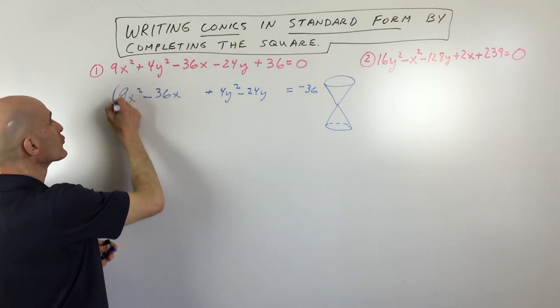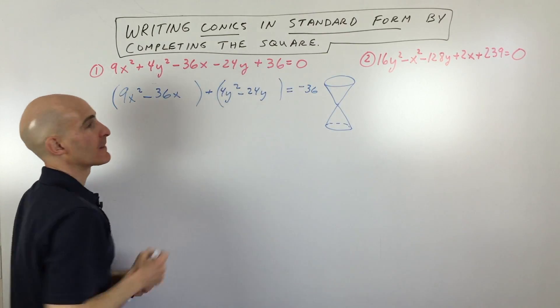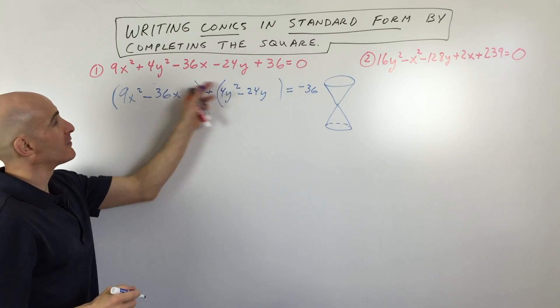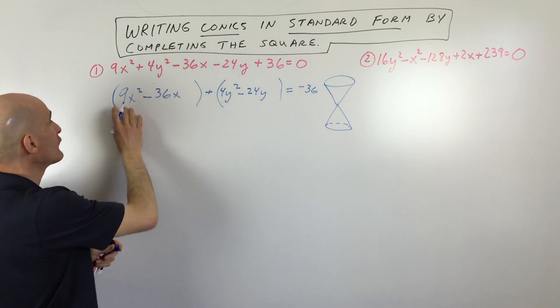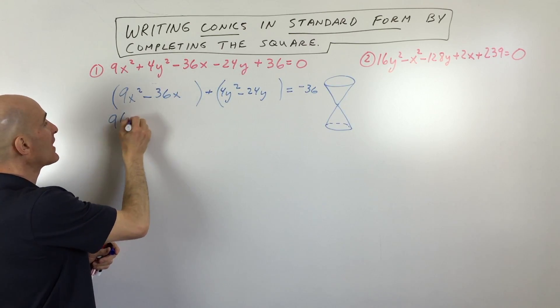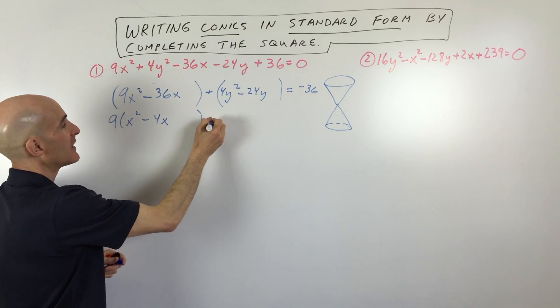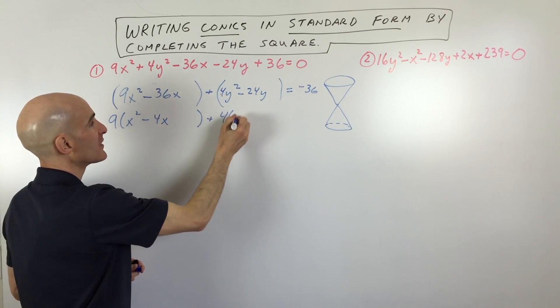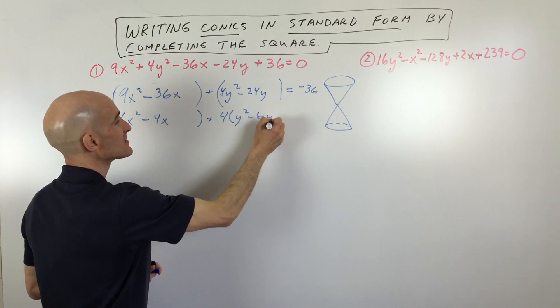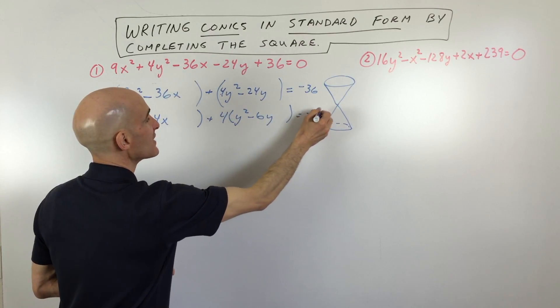Now what we're going to do is we're going to group these together, the x's and the y's, and we're going to factor out the leading coefficient. So if you factor out a 9 here, what we're going to have is x squared minus 4x. And if we factor out a 4 here, we're going to be left with y squared minus 6y equals negative 36.